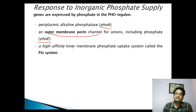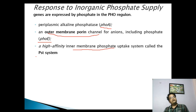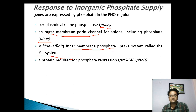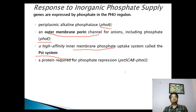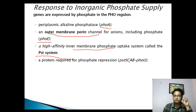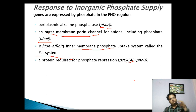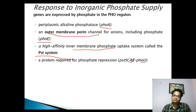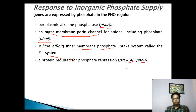There is a high-affinity inner membrane phosphate uptake system known as the PST system. This PST system involves several proteins — particularly a protein known as PSTS, which has very high affinity for inorganic phosphate. There are three proteins known as CAB which form the transmembrane channel, and another protein known as PHOU, which is involved in the regulation of phosphate transport.